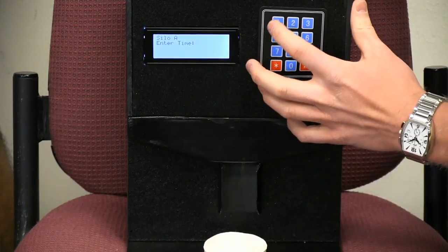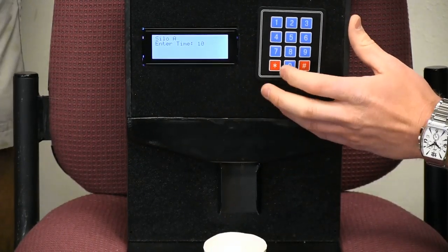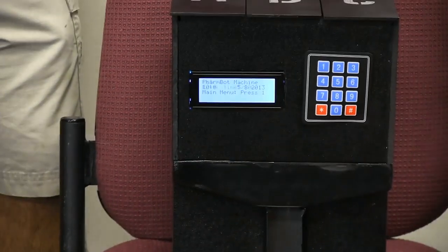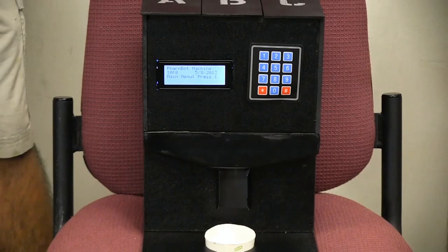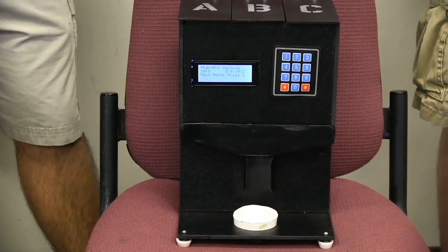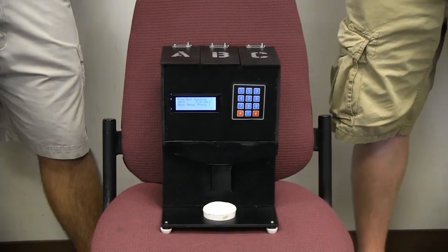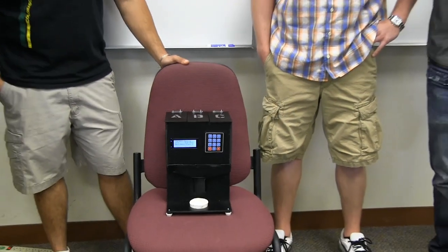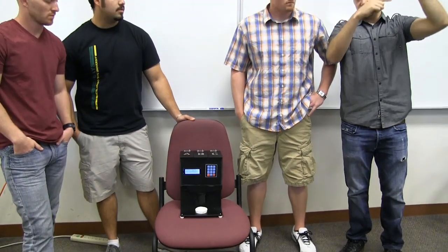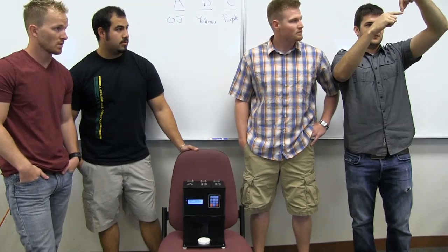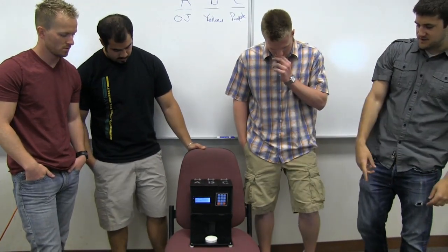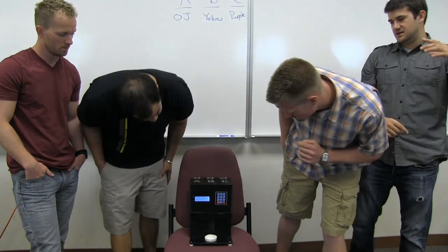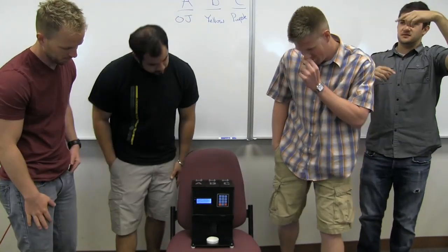Basically, what happens when a pill gets dispensed is we have a silo that's a funnel, and at the bottom of the funnel there's a solenoid that blocks all the pills from coming down. When the time is correct, the solenoid fires, allowing a pill to drop, and then it pushes out the front down into our cup. There's an infrared beam going across the bottom of the machine.